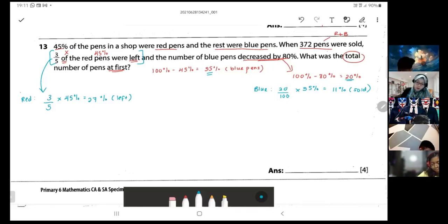So from the red pens, can I find how many were sold? I know that we can take 45 percent minus 27 percent equals to 18 percent. This is what was sold.